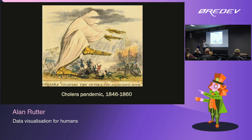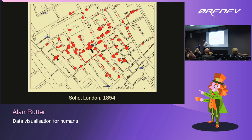John Snow took all the cases in the outbreak and plotted them onto a map. By looking at the map, he could ask: is there a pattern here? Is there a cluster? Is there some trend I can understand in the data? This is what the map looked like — the original version, slightly enhanced with color. By viewing the data visually, instead of as individual cases or tabular data, he could see that cases were clustering towards the center of the map, with a particular cluster just to the left of center.